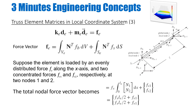I do the same for my force vector. I substitute the values of N into the integral equation. I can replace FB and FS — the body forces and surface forces — acting onto my truss element. Suppose the element is loaded by an evenly distributed force FX along the X axis, and two concentrated forces FS1 and FS2 are acting on the two nodes. Solving the equation gives this type of relationship for my force vector.